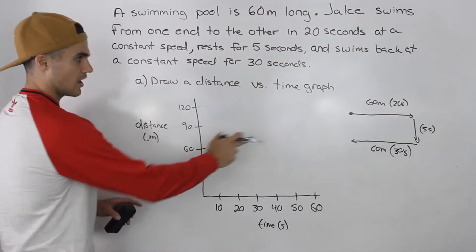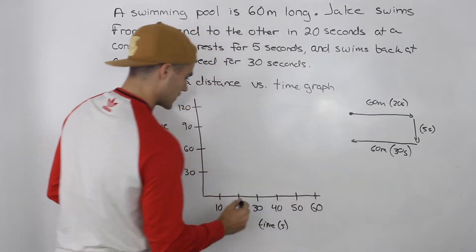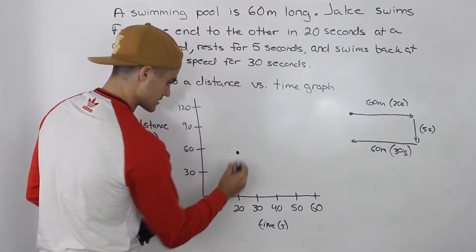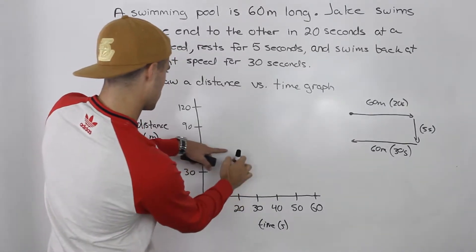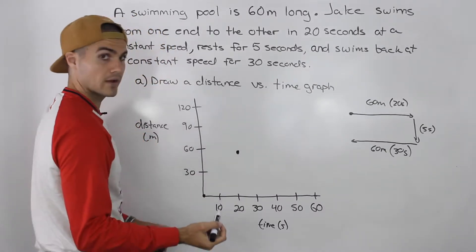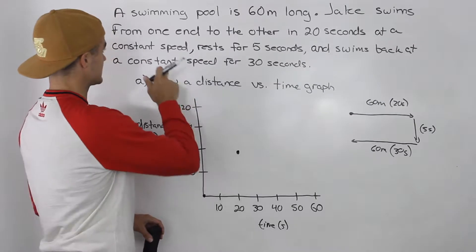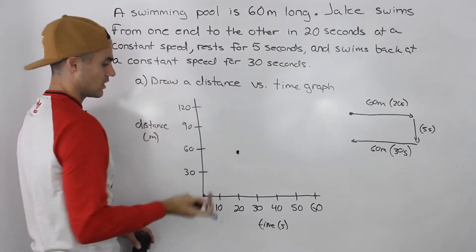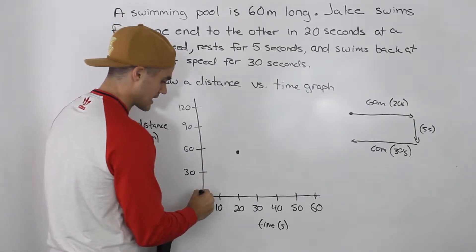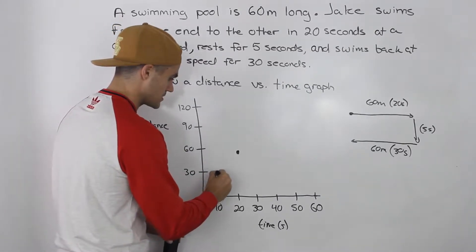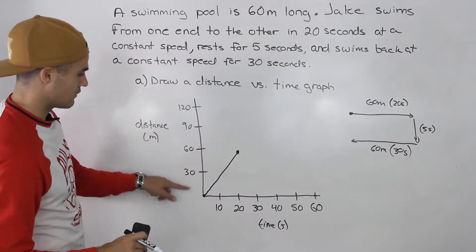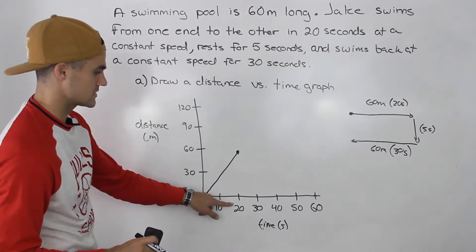He covers 60 meters in 20 seconds. He's starting at a distance of zero at zero seconds, and it says he's swimming at a constant speed. If you remember, a constant speed on a displacement versus time graph means it's just going to be a straight line. So he covers a distance of 60 meters in 20 seconds.